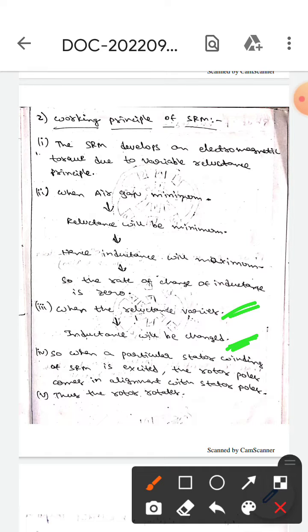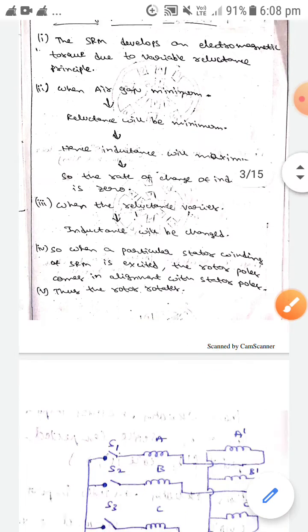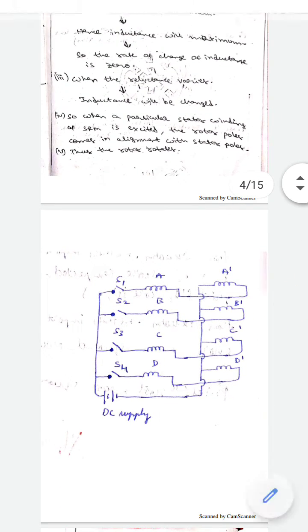So when a particular stator winding of SRM is excited, the rotor poles come in alignment with stator poles. Then the rotor starts rotating. If you observe here, this is the diagram related to working principle of synchronous reluctance motor.